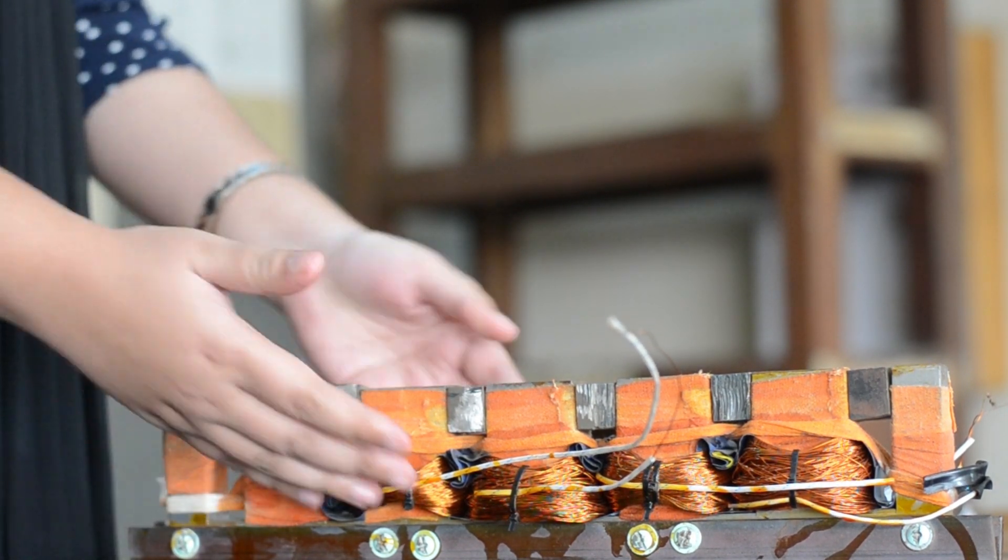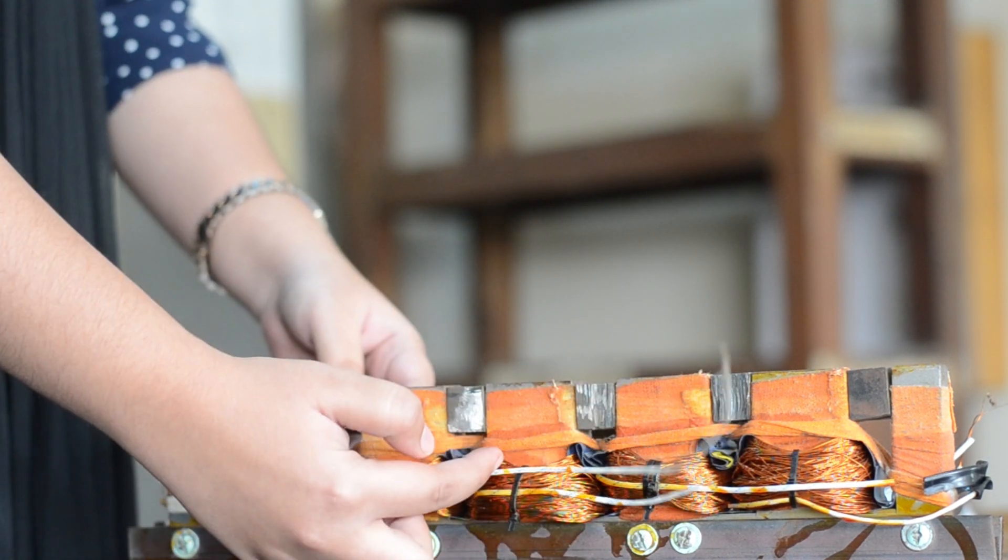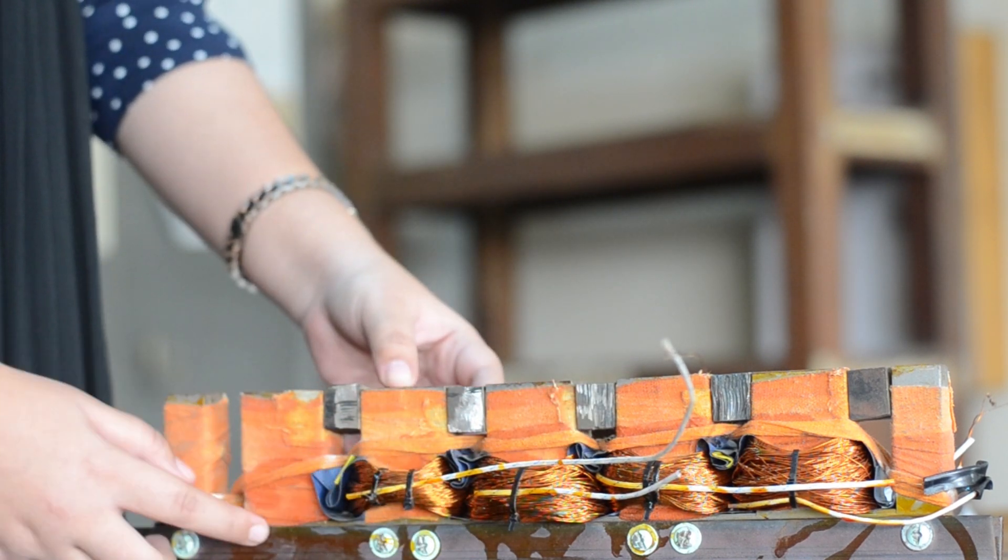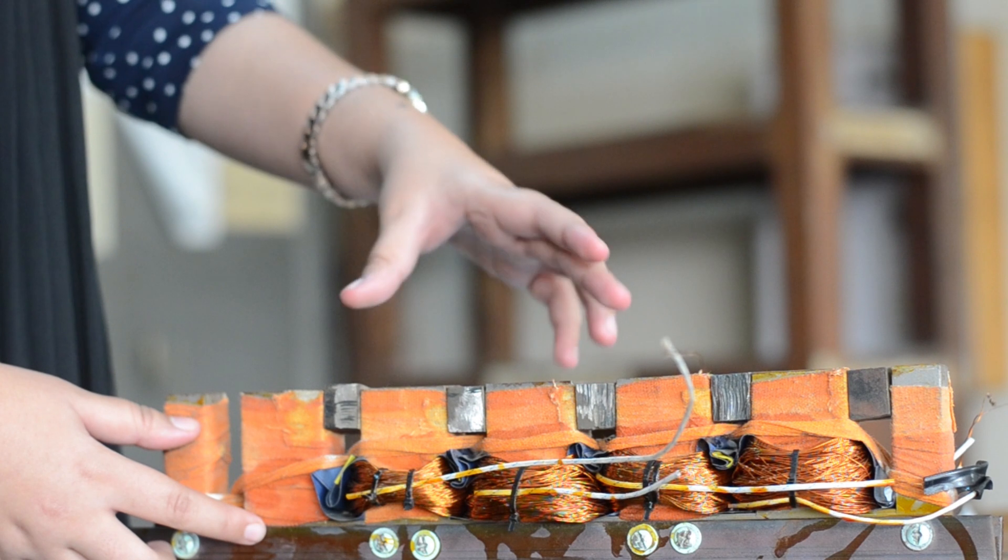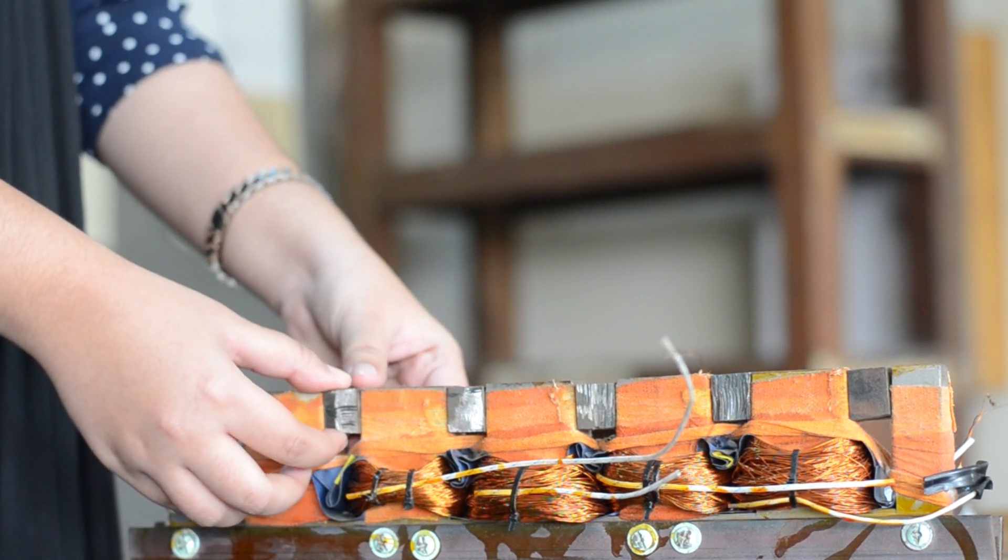We put the windings in the slots and there are two main windings, this one and this one, and two auxiliary windings, this one and this one. We used 27 gauge wire for the main winding and 29 gauge wire for the auxiliary winding, which is just a bit thinner than the main winding.